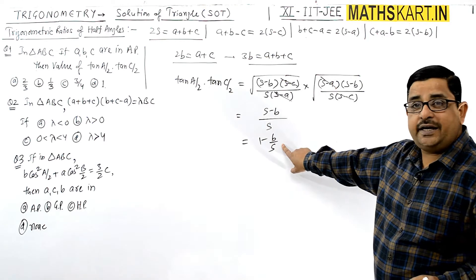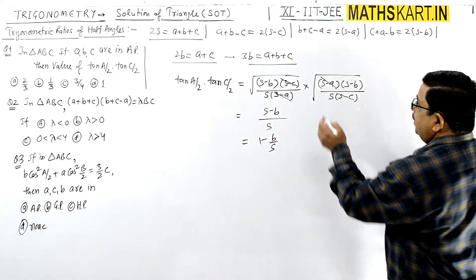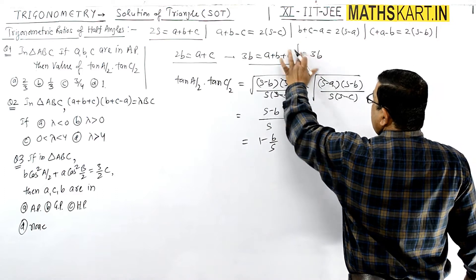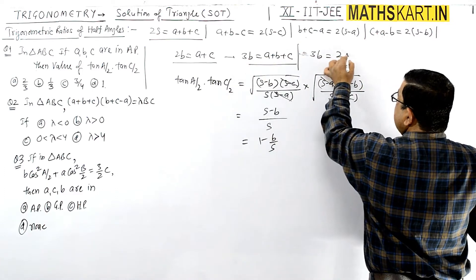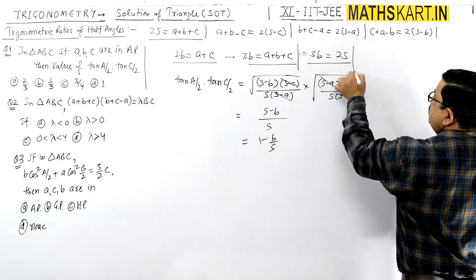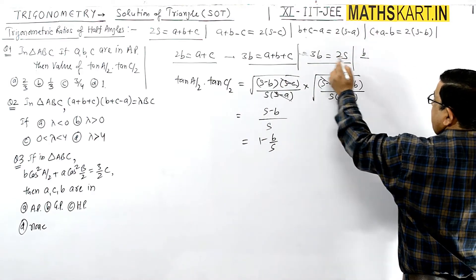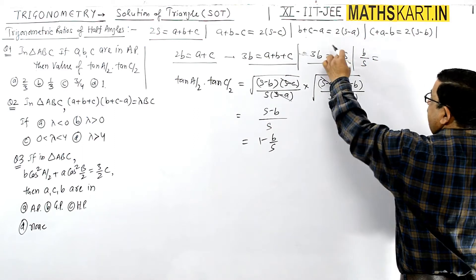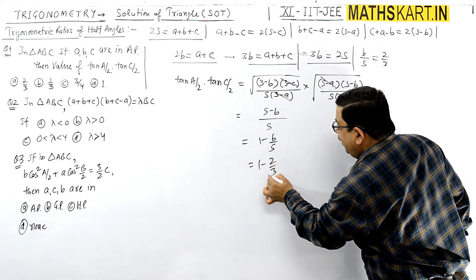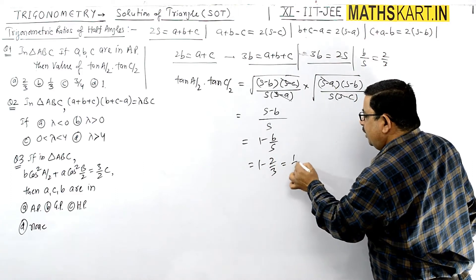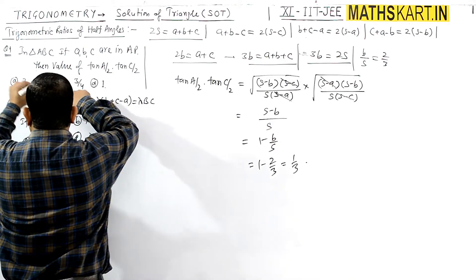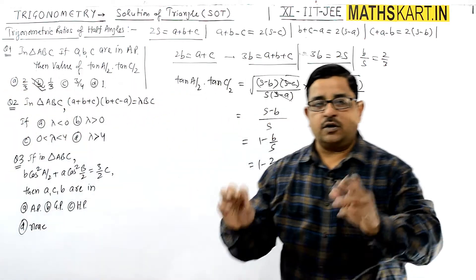Now the relation is required here. We can write 3B = 2S, so B/S = 2/3. Just place the value 2/3 and we get 1 - 2/3 = 1/3 as the answer. So option B is correct. It is easy — just place the formula values.